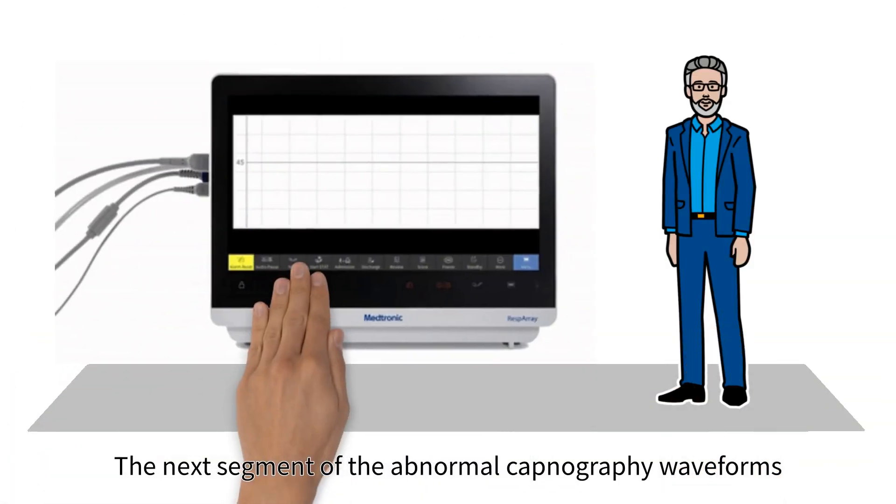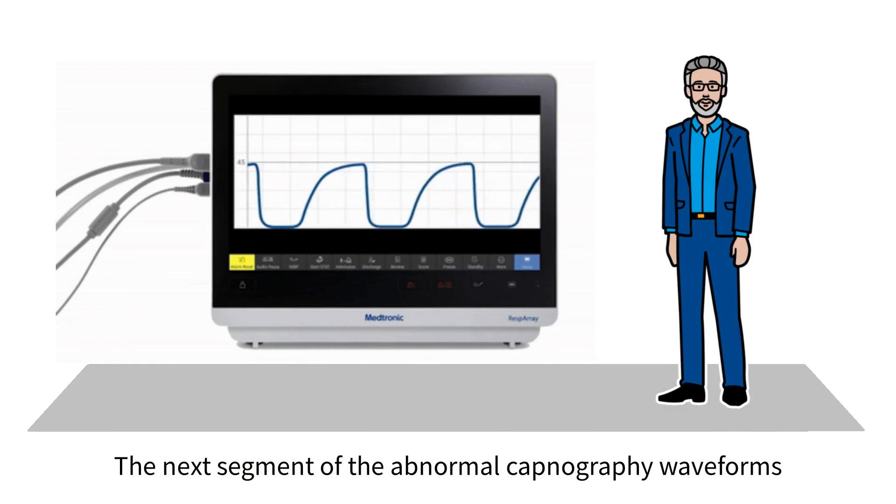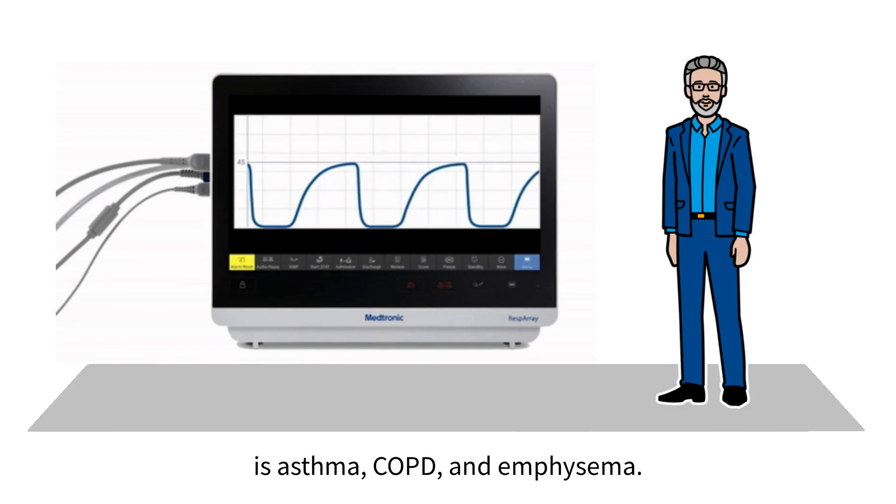The next segment of the abnormal capnography waveforms is asthma, COPD, and emphysema.